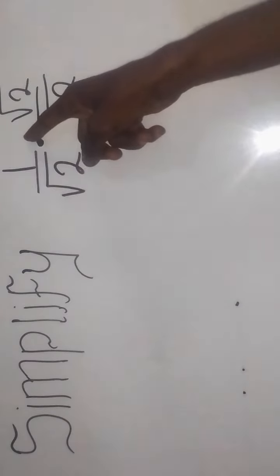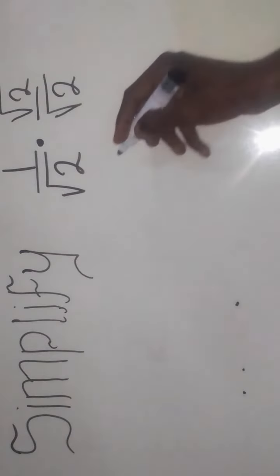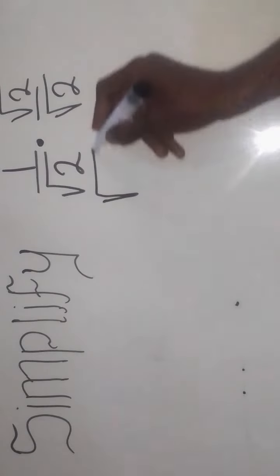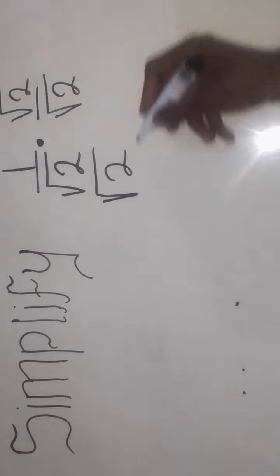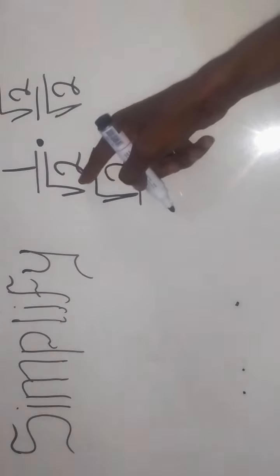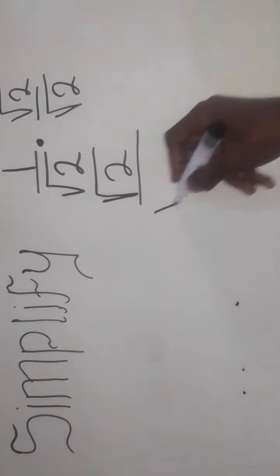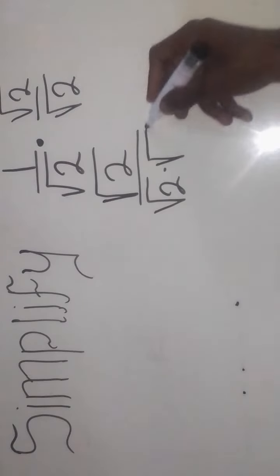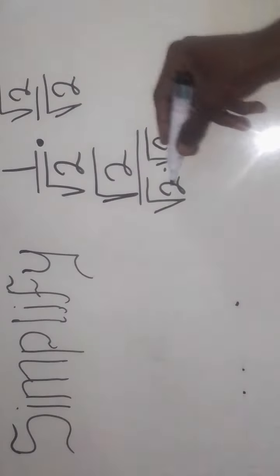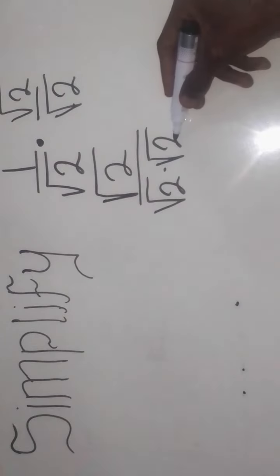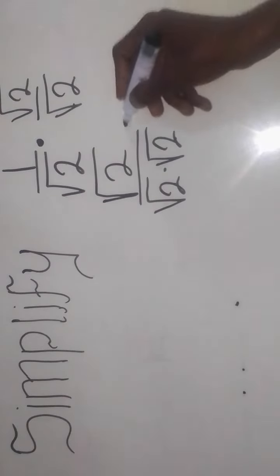It is going to be 1 times this one, going to give me the square root of 2 there. Now, the denominator, this one, is the square root of 2 times the square root of 2.